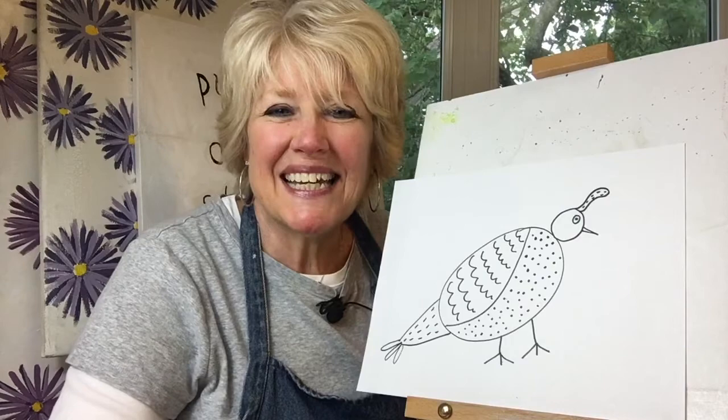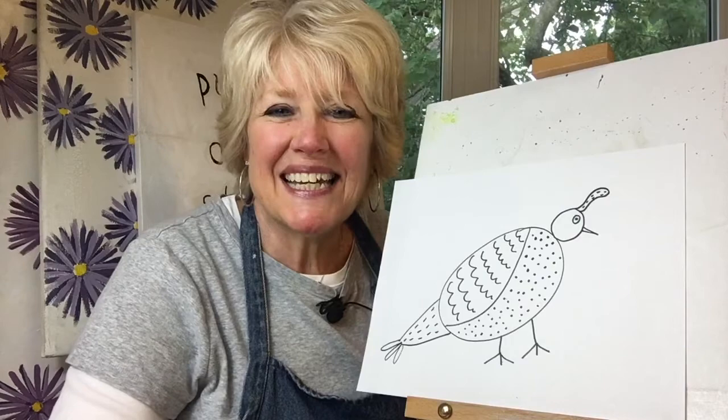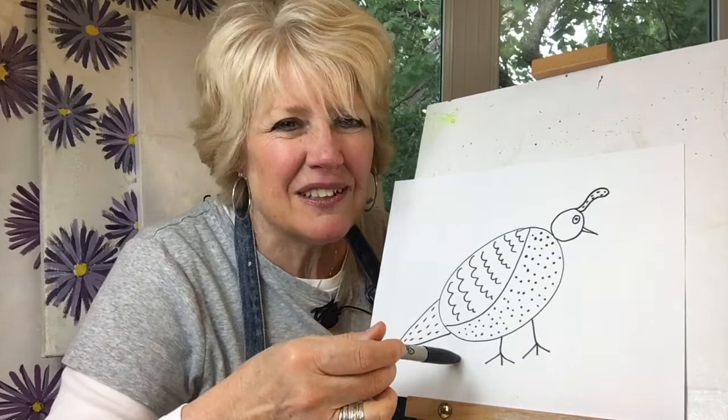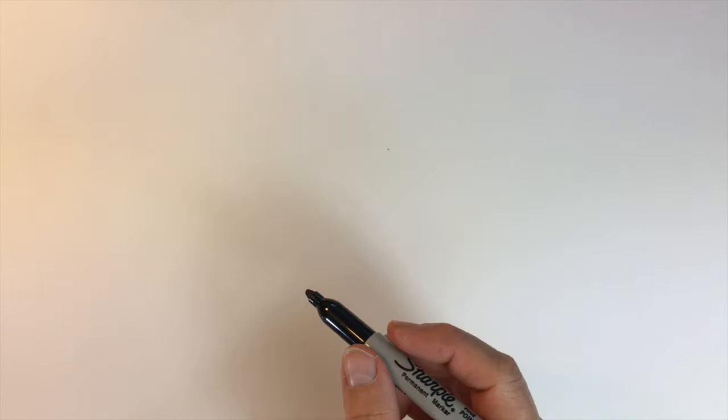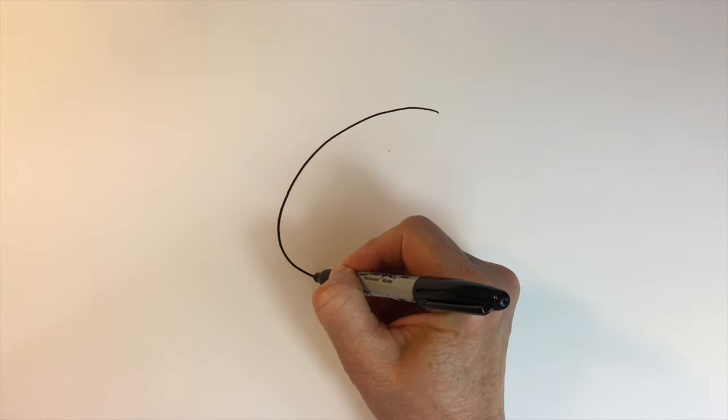We get to draw a quail and we'll see if our drawing of a quail can kind of look like this one using basic shapes and lines. The first shape I'll draw for our quail is a diagonal oval or an oval on a slant, and this will be for our quail's body.